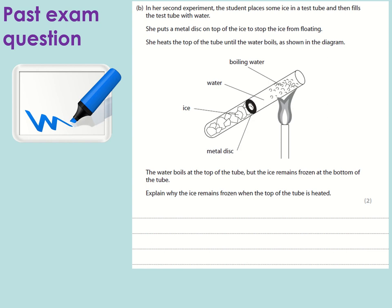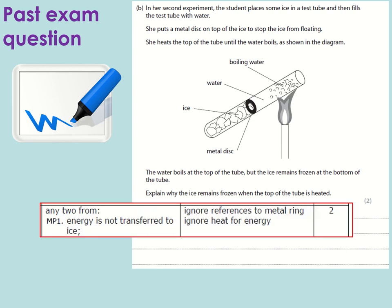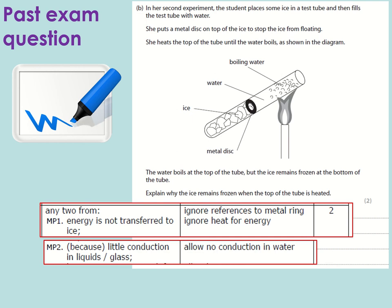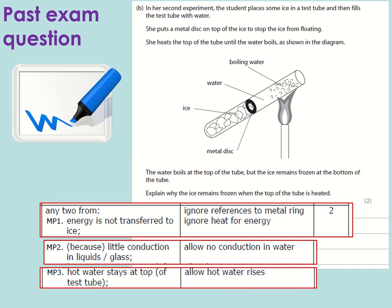This is an example of a question where there are four possible things you can get the marks for, and you can have a maximum of any two. If you say the energy is not transferred to the ice, that would get you one mark. This is because there is not very much conduction. So there is not much conduction in the water or in the glass. The water at the top stays hot because it is less dense.